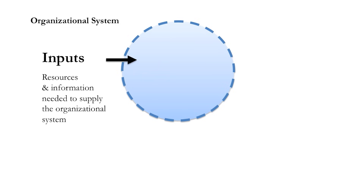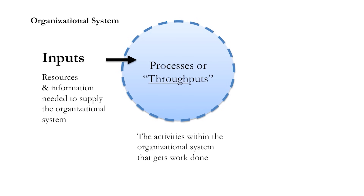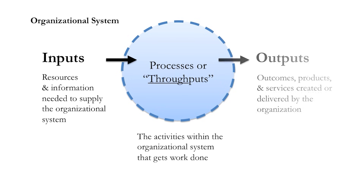In an organization we have three main parts. We have a set of inputs — resources and information that are needed to supply the organizational system. We also have the processes or throughputs — all the activity within the system needed to accomplish work. And then we have the outputs, which are the outcomes, the products, the services created and delivered by the organization.